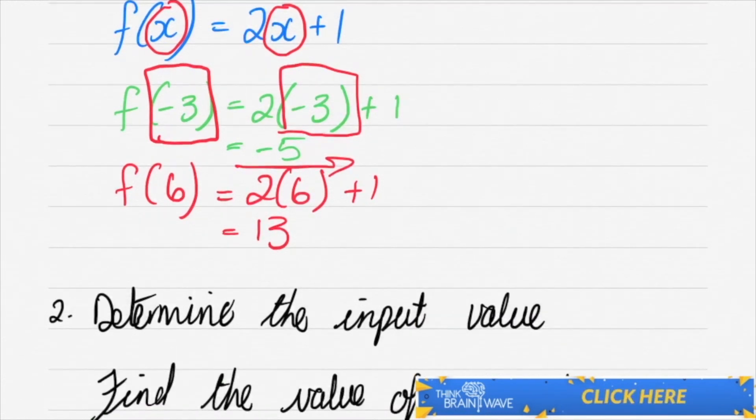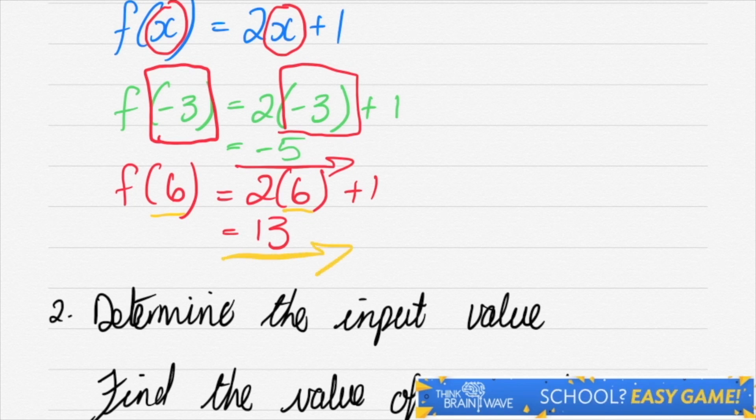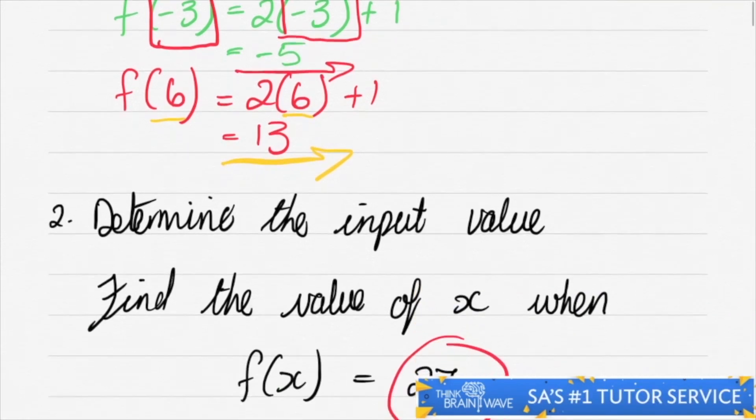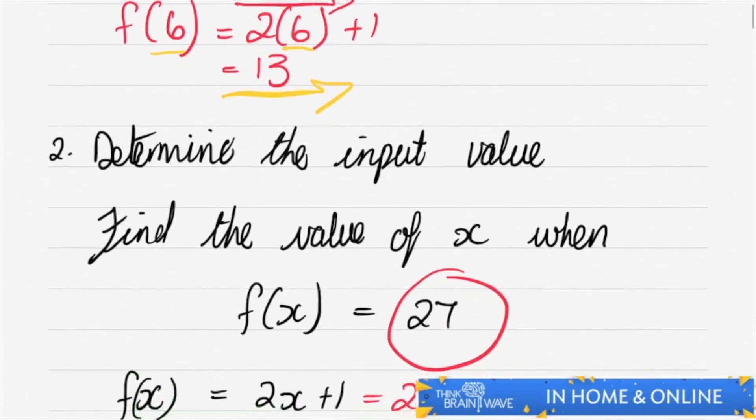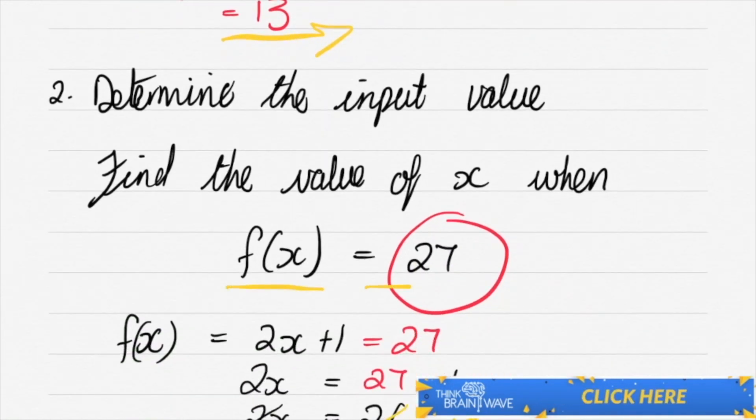Over here we have function of minus six, so where we see the X we put six, we get our solution of thirteen. Now let's determine the input value. If we're given that a function is equal to a certain number, we put our function equal to that number.